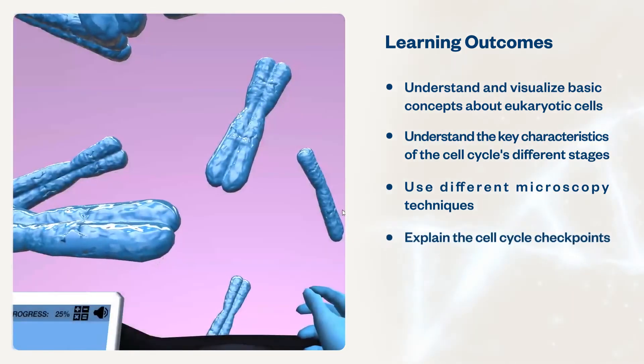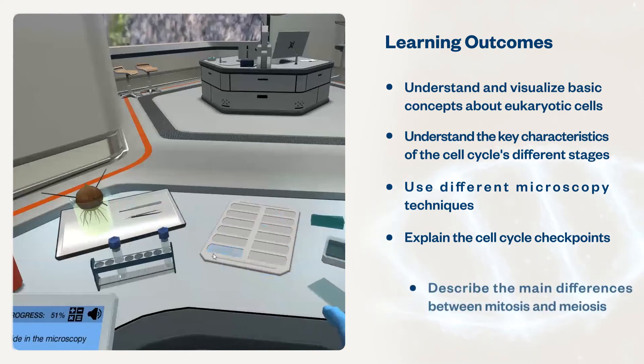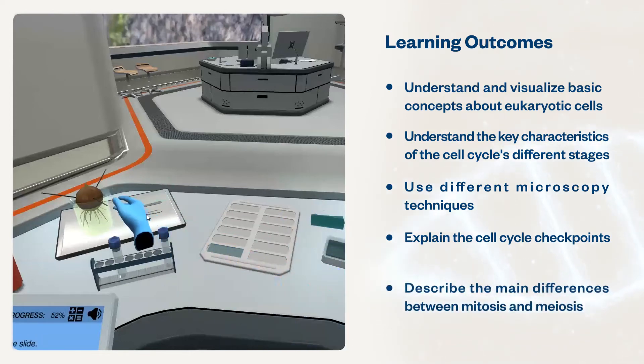Explain the cell cycle checkpoints and name the molecules that control them, cyclins and cyclin-dependent kinases and their function. Describe the main differences between mitosis and meiosis.